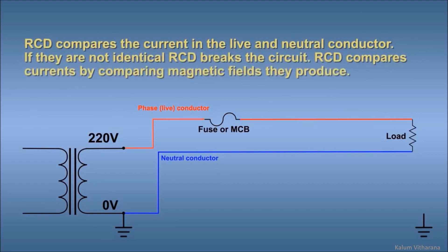An RCD compares the current in the live and neutral conductors. If they are not identical, the RCD breaks the circuit. The RCD compares currents by comparing the magnetic fields they produce.